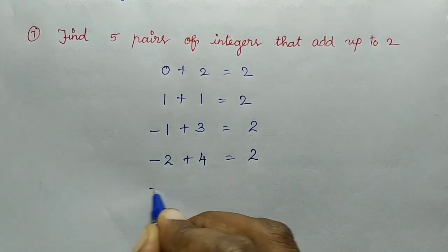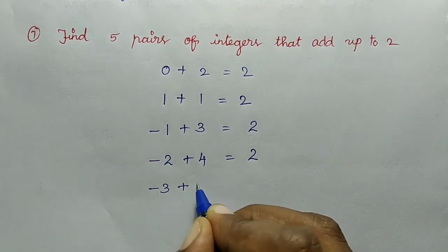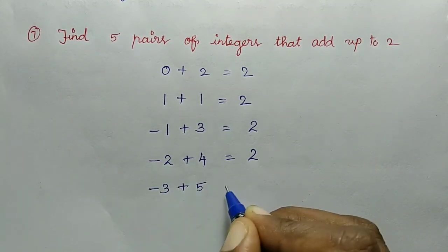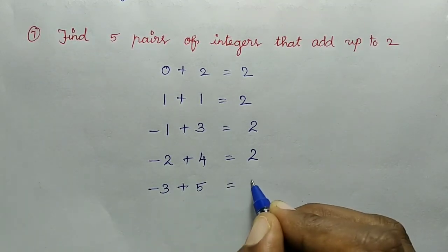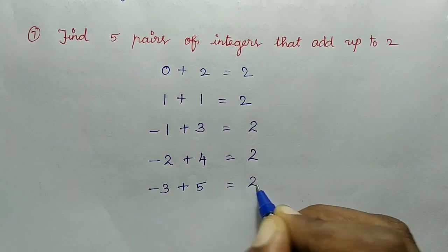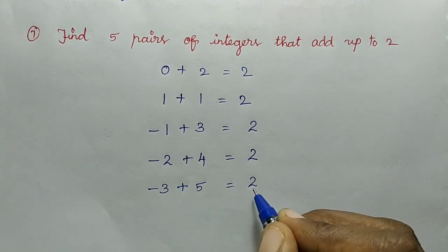Next value: minus 3 plus 5. Here we have one negative and one positive value. 5 minus 3 equals 2, so the greater value is positive and the answer is 2.